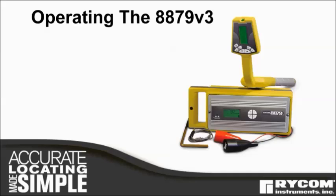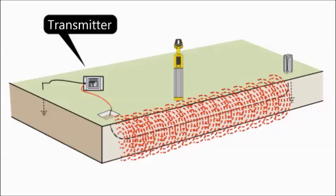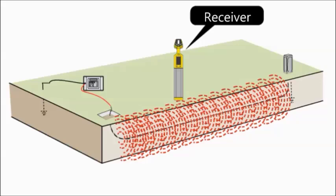This video will introduce you to the operation of the 8879 V3 cable and pipe locator. The basic principle of operation: a transmitter applies an electrical current to a buried conductor, then a receiver is used to detect the electromagnetic field radiating from the underground conductor.